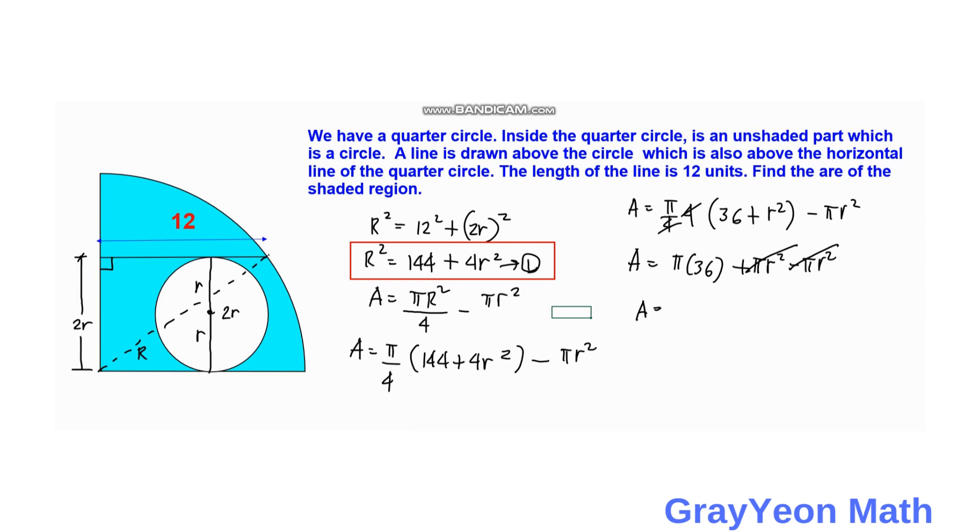So we have now the answer as 36 pi. So we have now the answer is 36 pi square units.